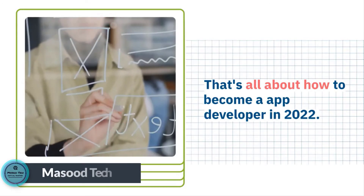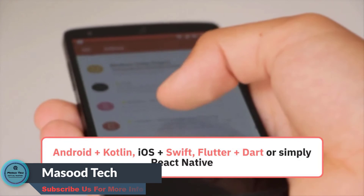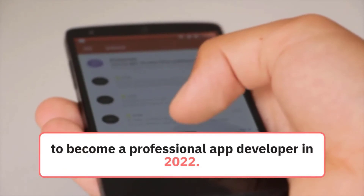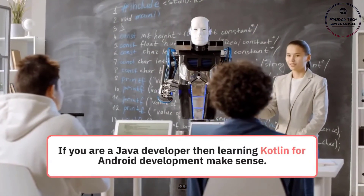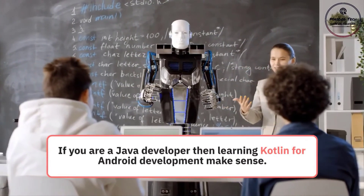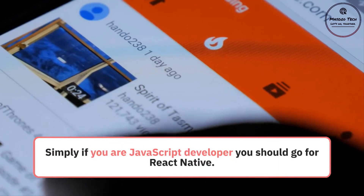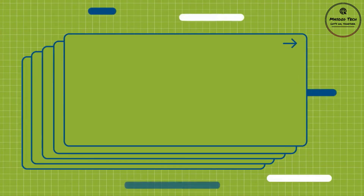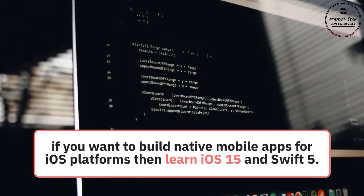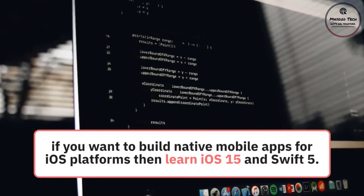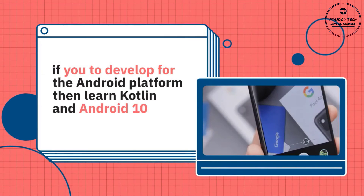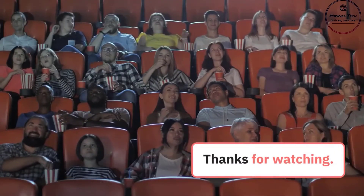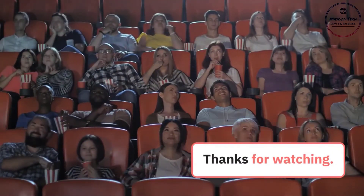That's all about how to become an app developer in 2022. As mentioned, you can either learn Android plus Kotlin, iOS plus Swift, Flutter plus Dart, or simply React Native to become a professional app developer in 2022. You don't need to learn all of them — just choose the combo that suits your skill set. For example, if you are a Java developer, learning Kotlin for Android development makes sense. If you are a JavaScript developer, go for React Native. For native iOS, learn iOS 15 and Swift 5. For Android, learn Kotlin and Android 10. For cross-platform native apps, learn Flutter and Dart.